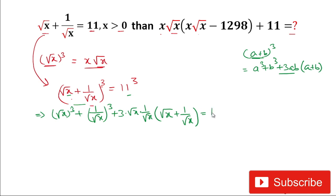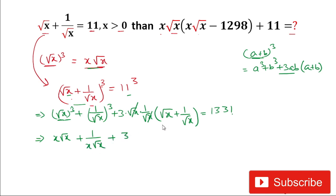The value of 11³ is 1331. Now simplifying: root(x) and 1/root(x) cancel, so [root(x)]³ = x·root(x), and [1/root(x)]³ = 1/(x·root(x)). Since root(x) + 1/root(x) = 11, we substitute that value and multiply by 11.